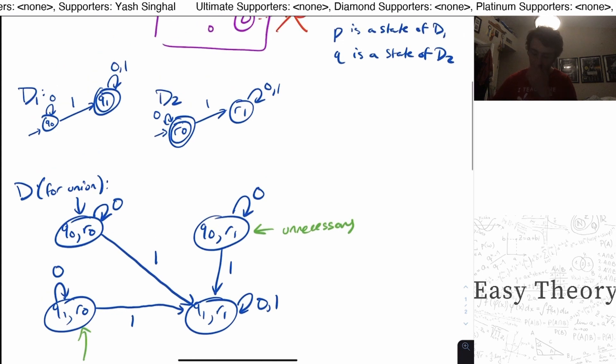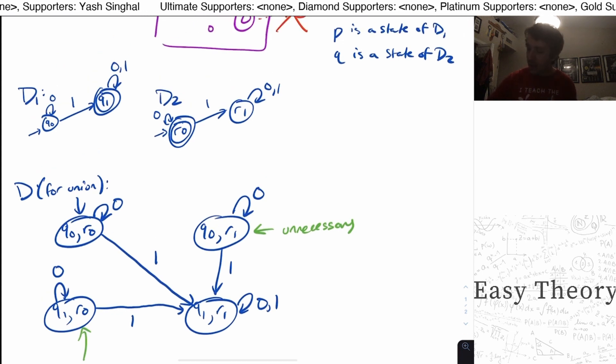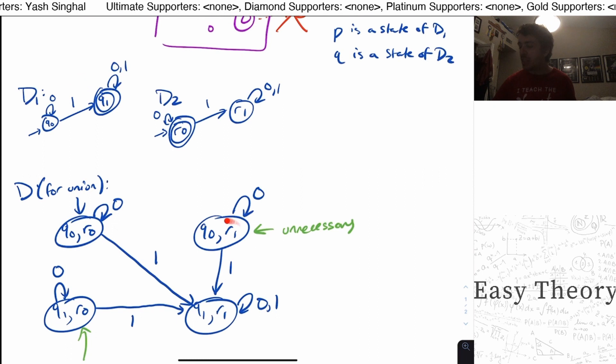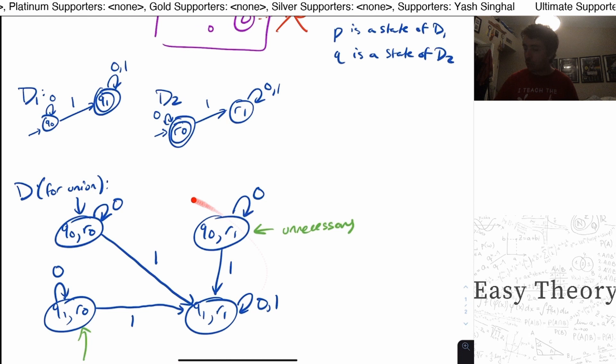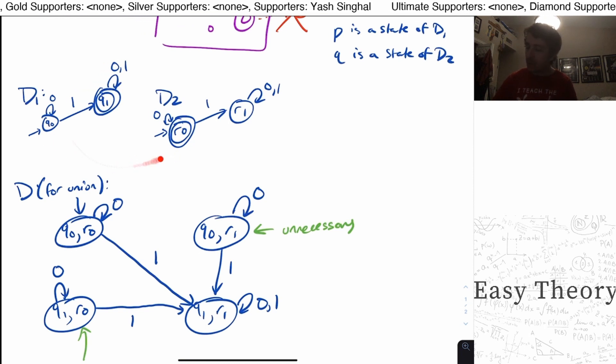And the simple explanation for why these states are unnecessary is that this combination of states Q0 and R1, and the other combination, Q1R0, are impossible to reach by any string in this DFA. Because you can actually verify for yourself here. But for a simple explanation, well, they're the exact same machine. So either we're in both of the zero states, or in both of the one states.